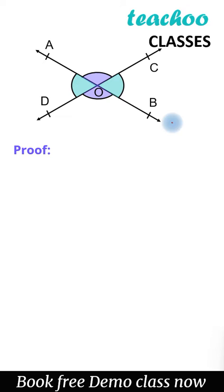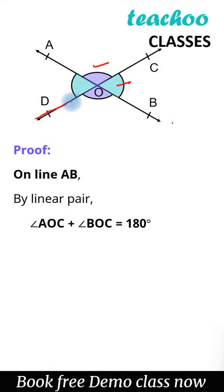So on this line AB we can see that these two angles are forming a linear pair. That means their sum is 180 degrees, so let's write it down. And similarly on this line CD, these two angles are forming a linear pair. That means their sum is 180 degrees. Let's write this as well.